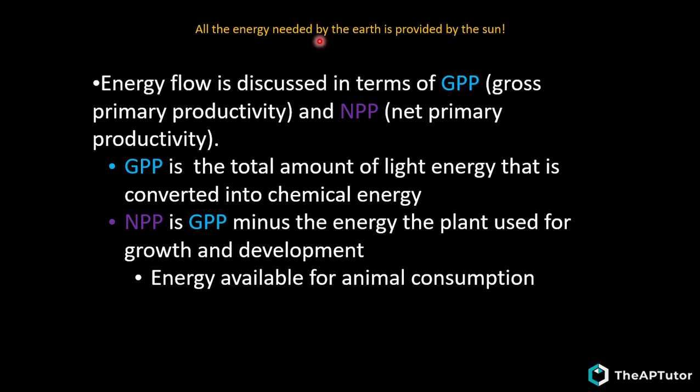Energy flow through the ecosystem: all the energy needed by Earth is provided by the sun. Energy flow is discussed in terms of GPP (gross primary productivity) and NPP (net primary productivity). GPP is the total amount of light energy converted into chemical energy - all the energy taken in by plants from the sun. NPP, or net primary productivity, equals GPP minus the energy the plant uses for its own growth and development. Whatever extra energy remains is available to other organisms.